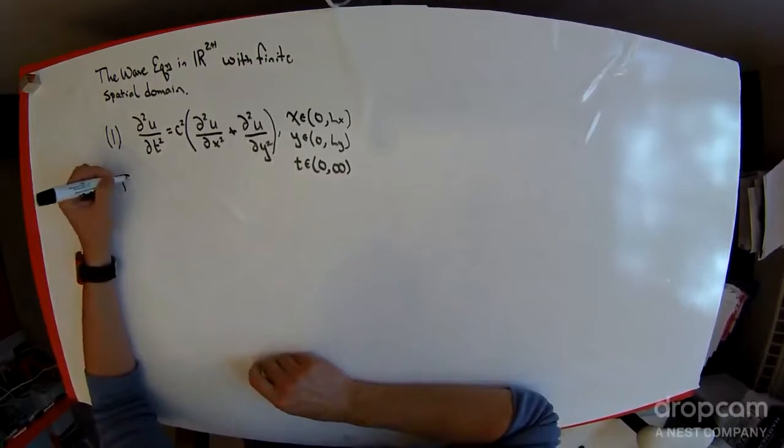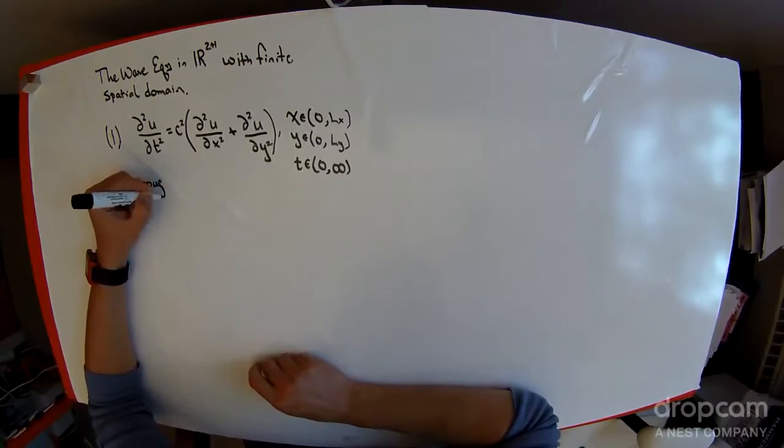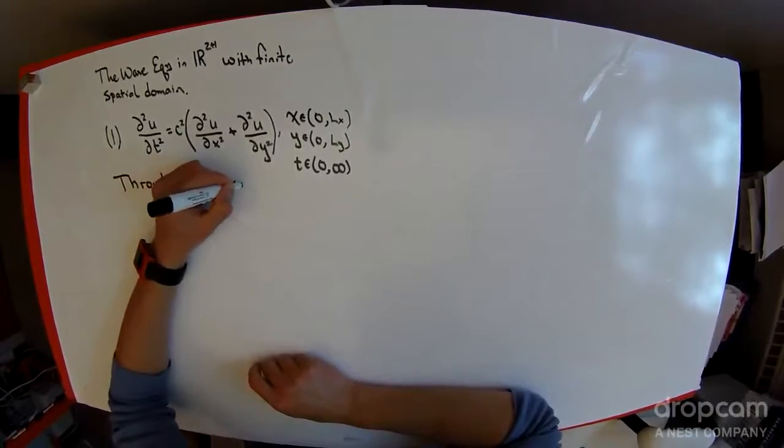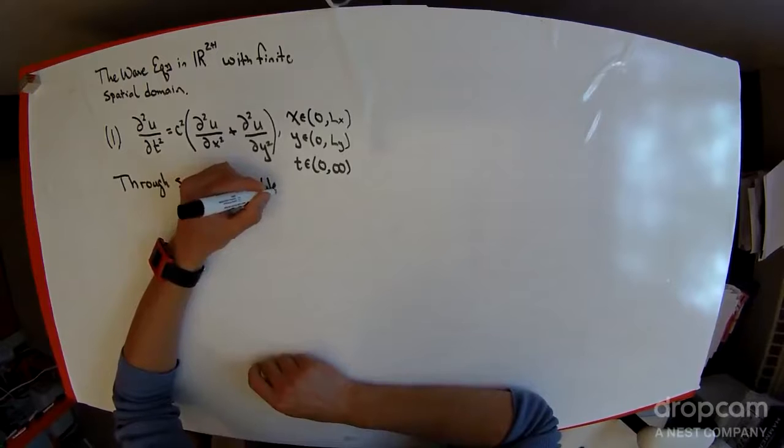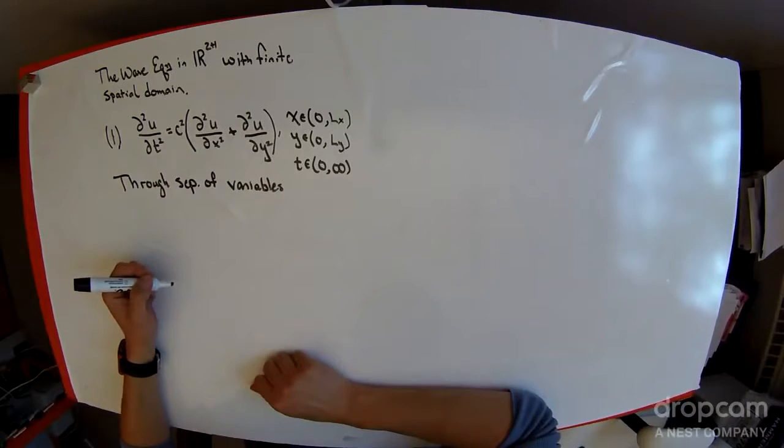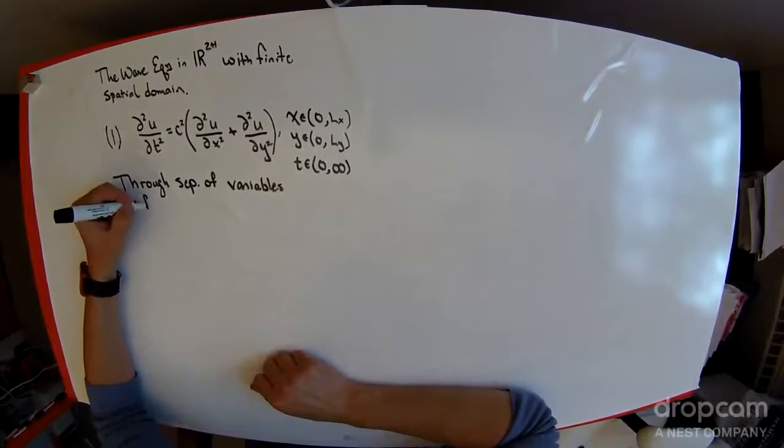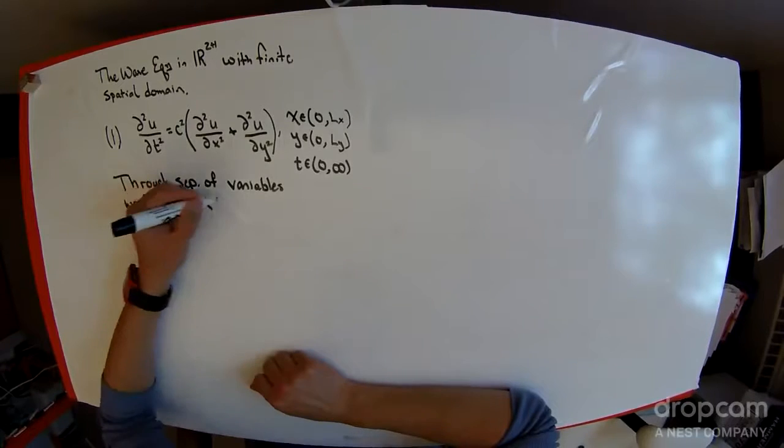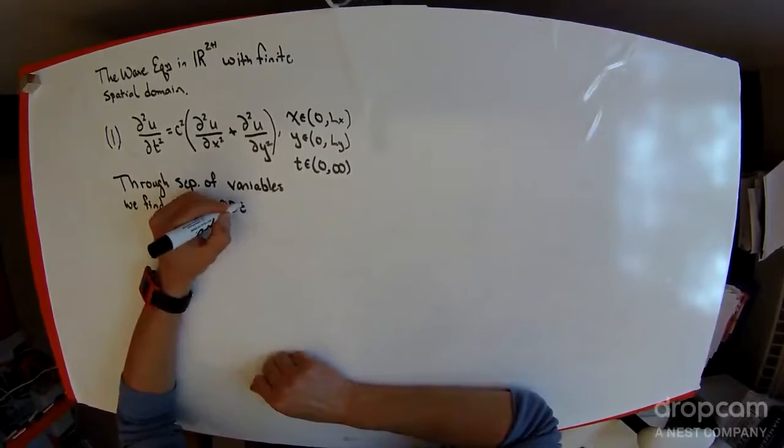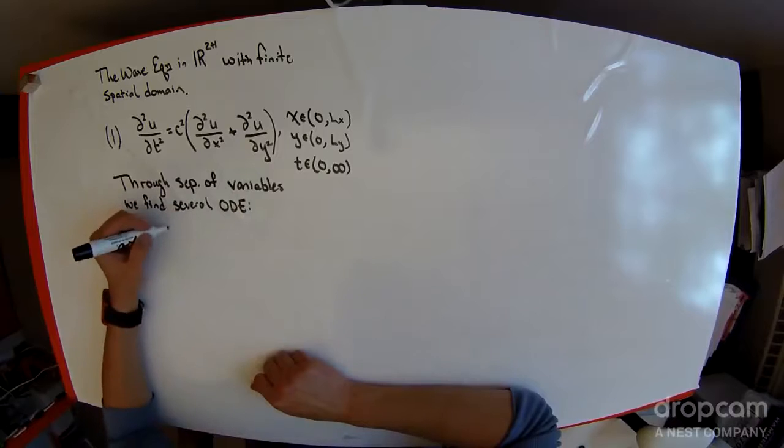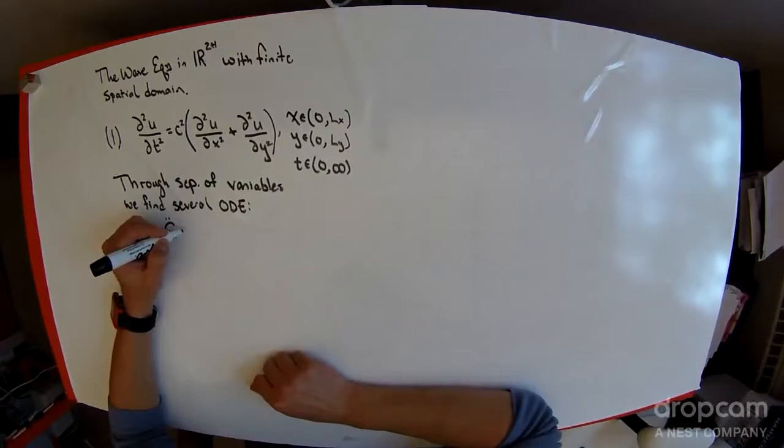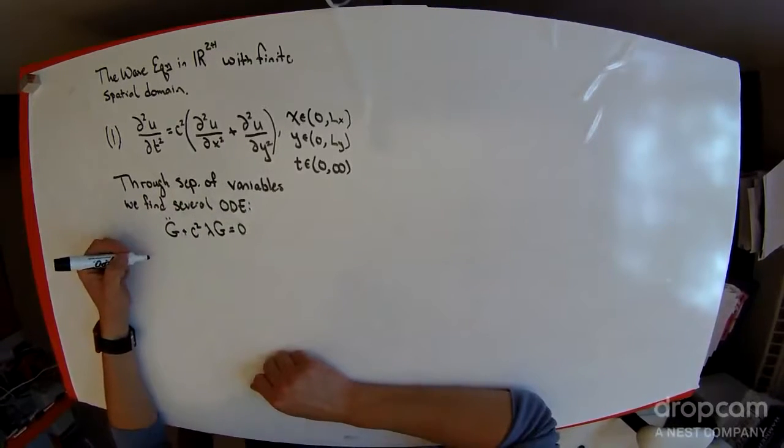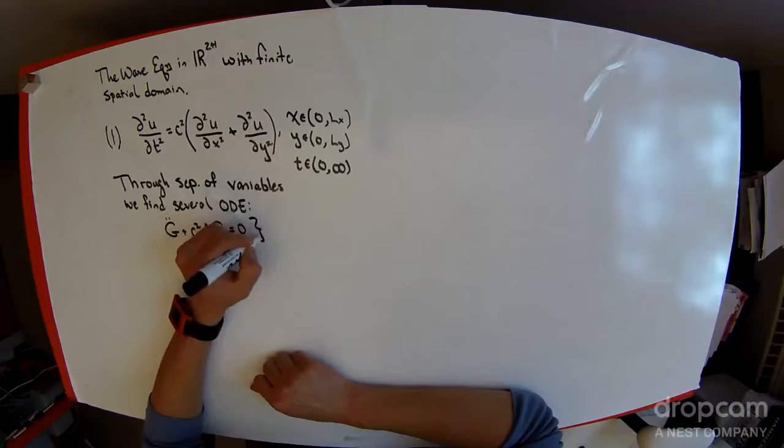Through separation of variables, we find several ODEs. One ODE looks like G double prime plus C squared lambda G is equal to 0. And this deals with the time dynamics of the shape.